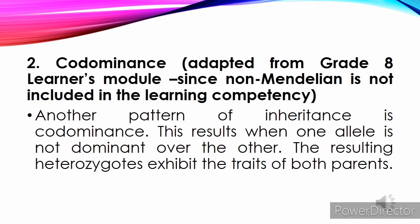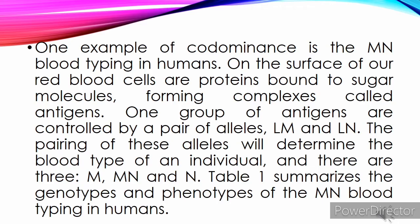Another pattern of inheritance is co-dominance. This results when one allele is not dominant over the other, and the resulting heterozygotes exhibit the traits of both parents. One example of co-dominance is the MN blood typing in humans. On the surface of our red blood cells are proteins bound to sugar molecules, forming complexes called antigens. One group of antigens is controlled by a pair of alleles, LM and LN.